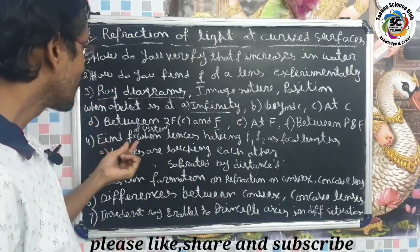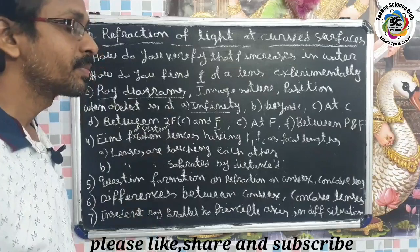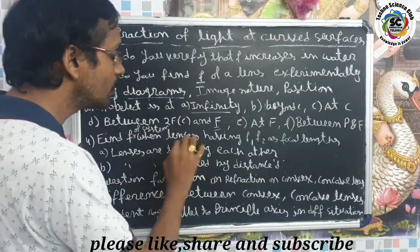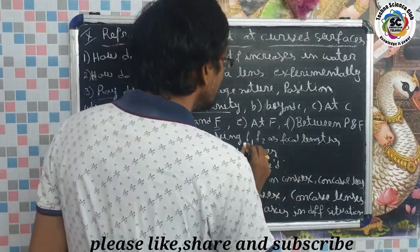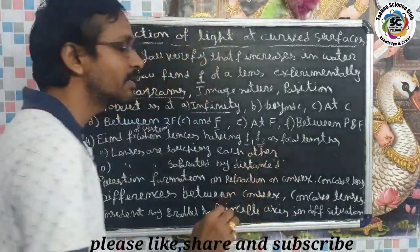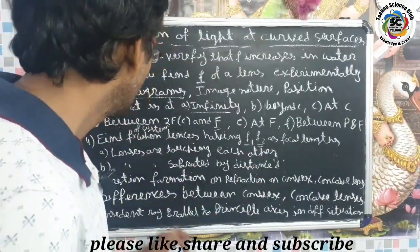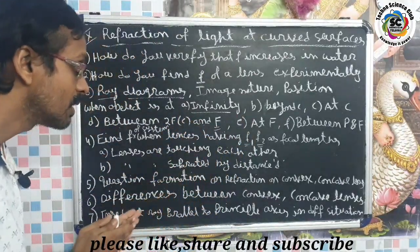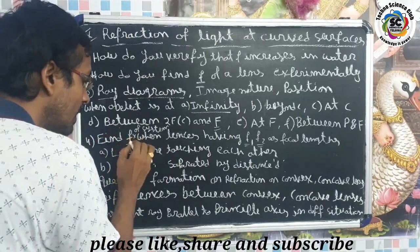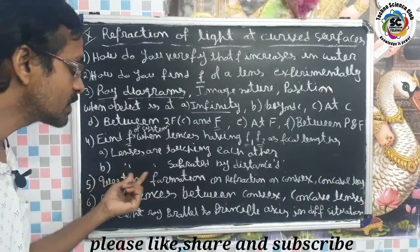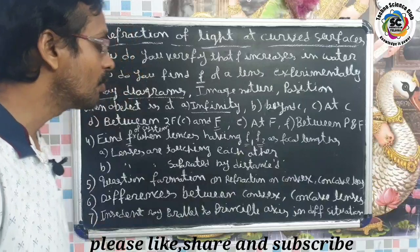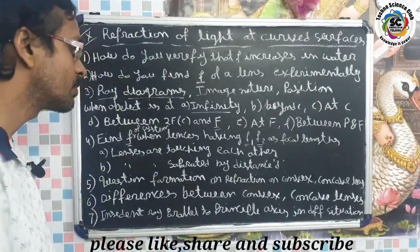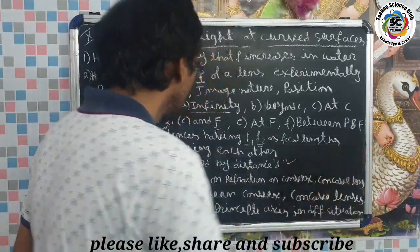Next important question: Find the focal length of a system of lenses. One system has two lenses with focal lengths f1 and f2. The first case is when the two lenses are in contact, and the second case is when they are separated — find the focal length of the system in each case.